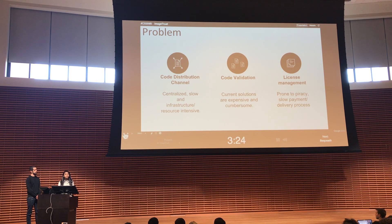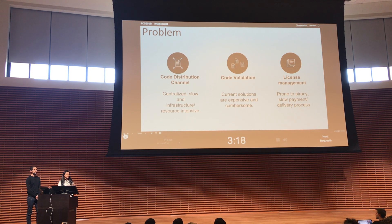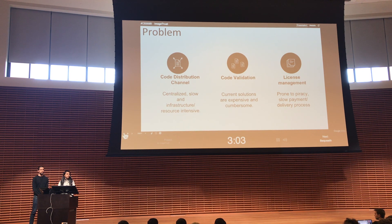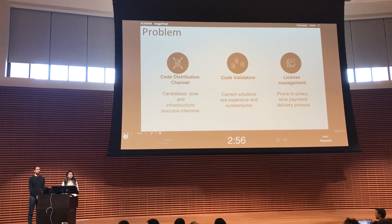Apart from that, there is a lot of open source software floating around on the internet. How do you make sure that these softwares are from an authentic source? Currently there are some solutions that provide an answer to that, but they are expensive and it's a slow process, and not very many developers or companies employ that — because as a developer, your main concern is to deliver a package. You don't really think a lot about security unless something bad happens through your software.